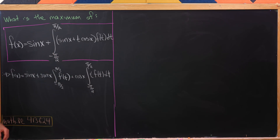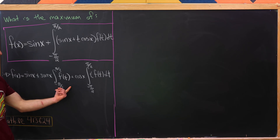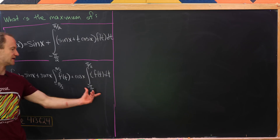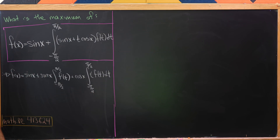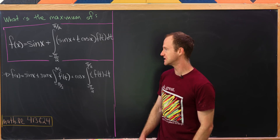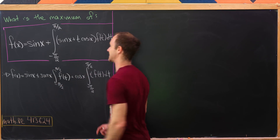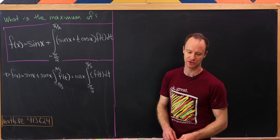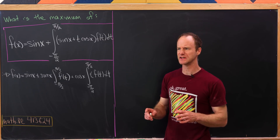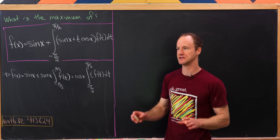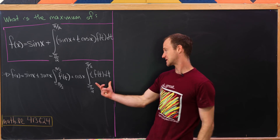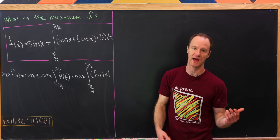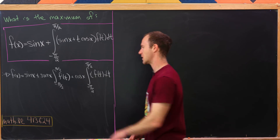Looking at it like this, it's clear that we need to get a handle on the integral of f(t) over this interval and the integral of t·f(t) over this interval. We can get some simplification if we integrate this entire equation with respect to x over the same interval from minus π/2 to π/2, introducing a kind of double similarity into the situation.